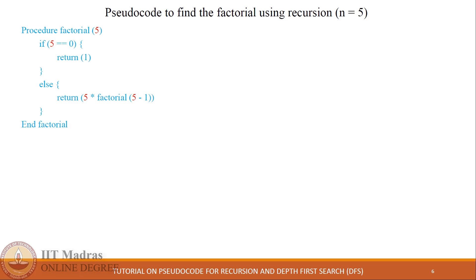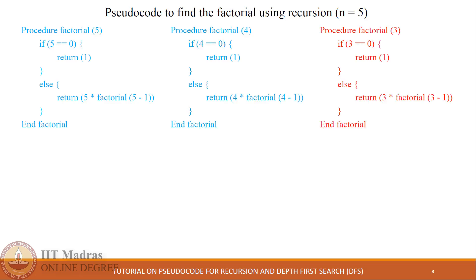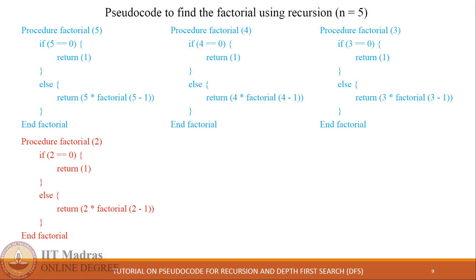We execute the procedure again with n equal to 4. Since 4 is not equal to 0, the else block executes, generating another procedure call with value 4 minus 1. The same thing happens for the third call producing 3 minus 1, and continues generating factorial of 1.